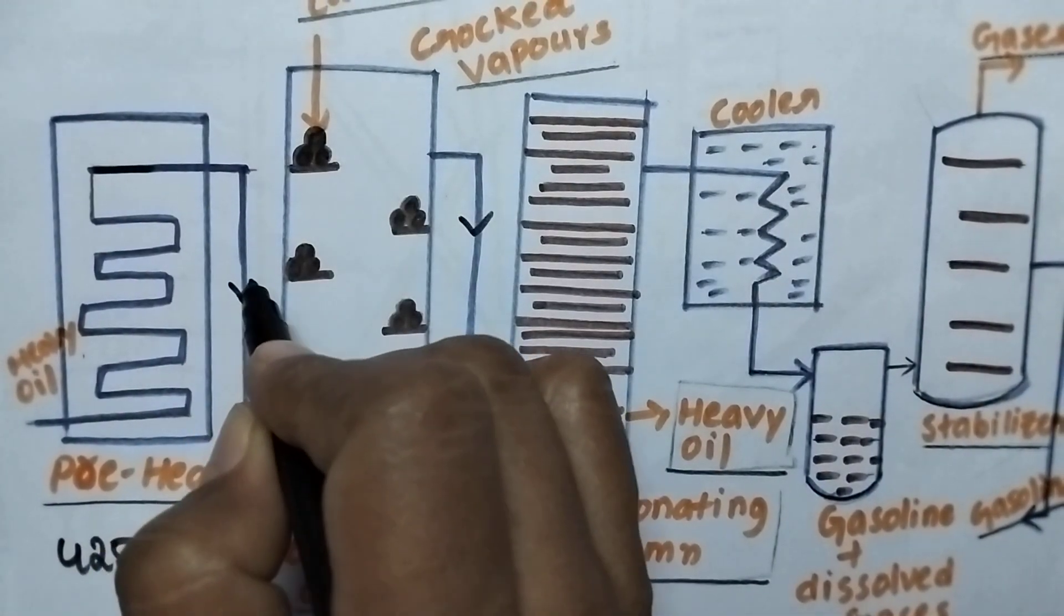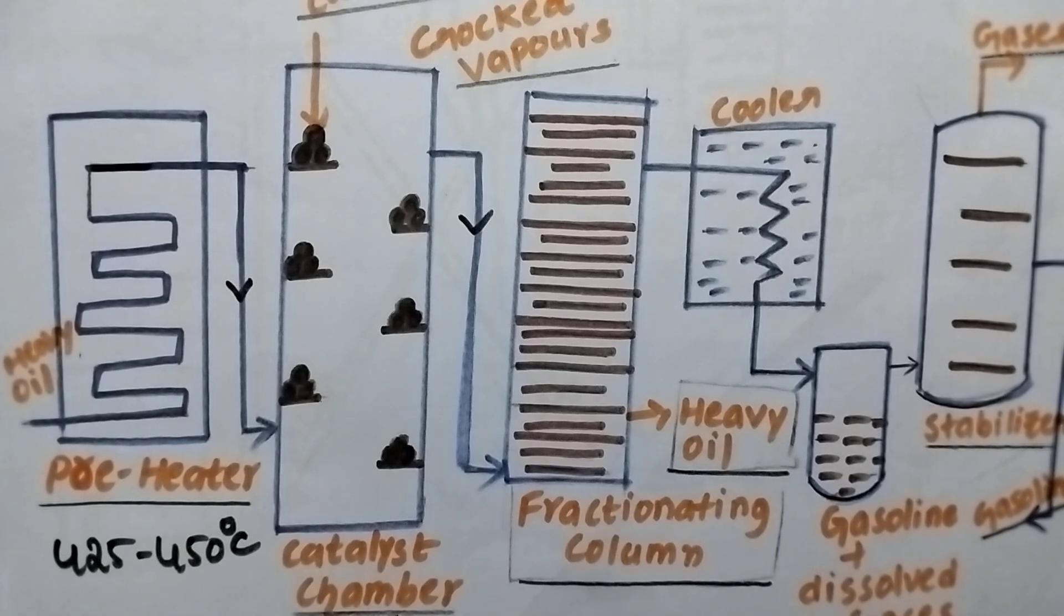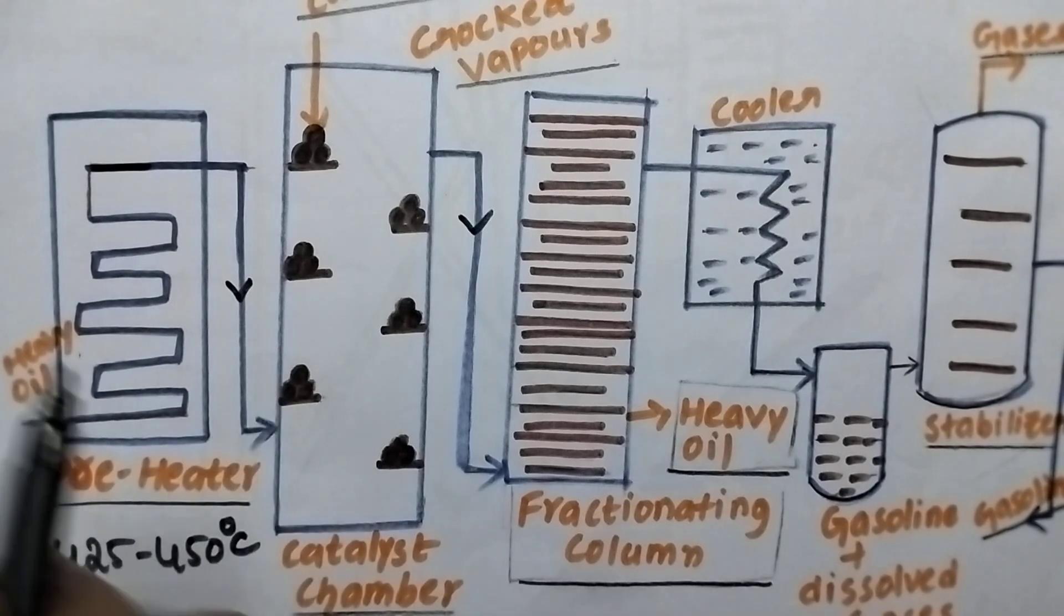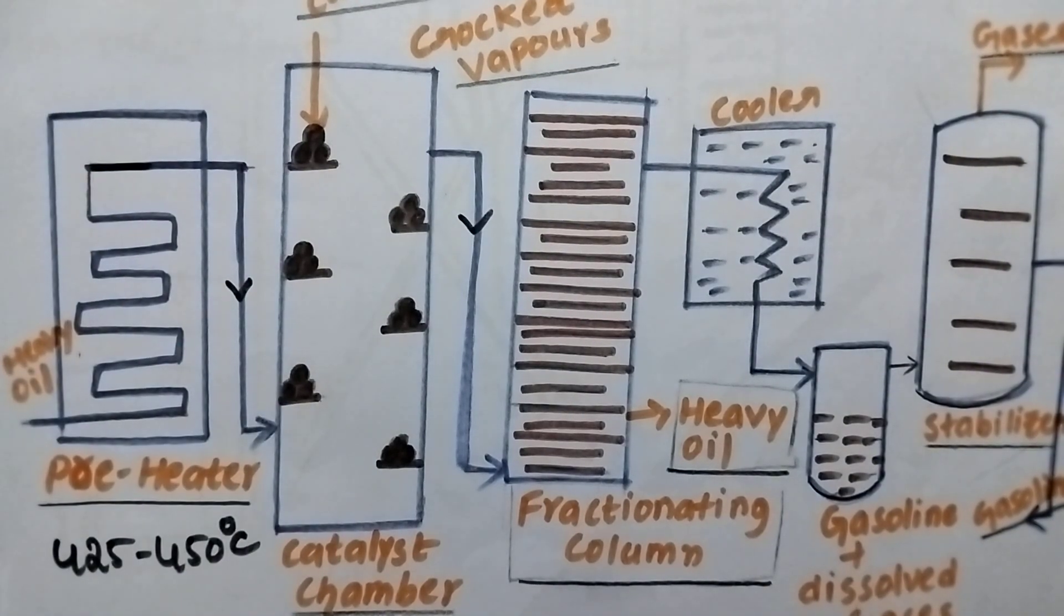Now the vapours of heavy oil will be passed into the catalytic chamber which is deposited with a catalyst. It is a mixture of clay and zirconium oxide.